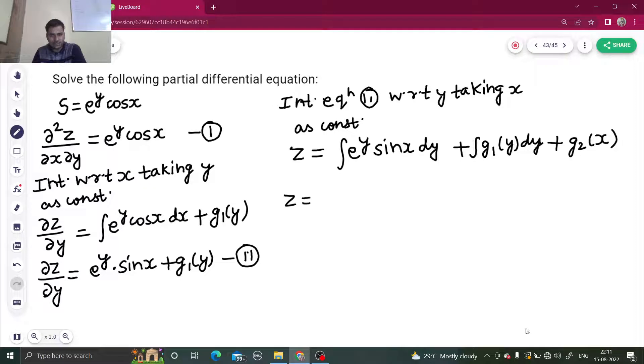So z equals—here x is constant, so sin x comes out—integration of e^y is e^y, plus integration of g₁(y). We don't know g₁, so we can't tell what is its integration, but one thing we are sure: that this will be a function of y only. So let's name that something like h₁(y).